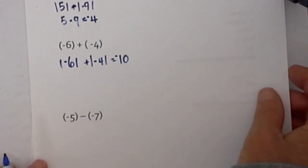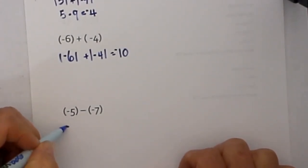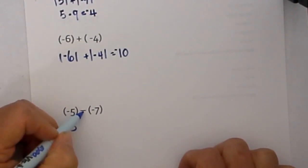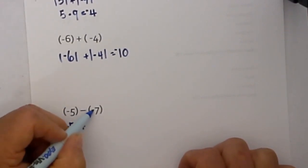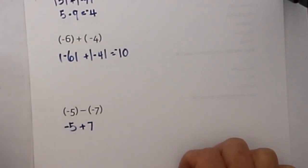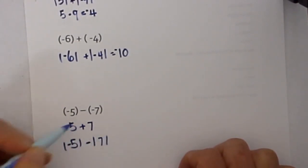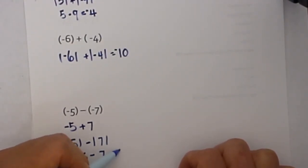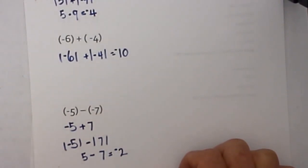Is the problem addition? No. So what we will do is change the sign. We will bring down the negative 5 and change the subtraction sign to addition, and change the sign of the number directly behind it from negative 7 to positive 7. Now is the problem addition? Yes. Are the signs the same? No. So we will subtract: the absolute value of 5 minus the absolute value of 7, which becomes 7 minus 5, equal to 2. Then we take the sign of the larger number, which is 7, so it will be negative 2.